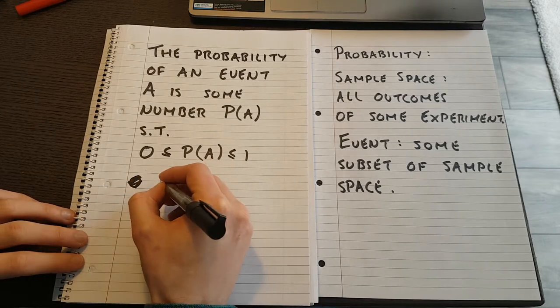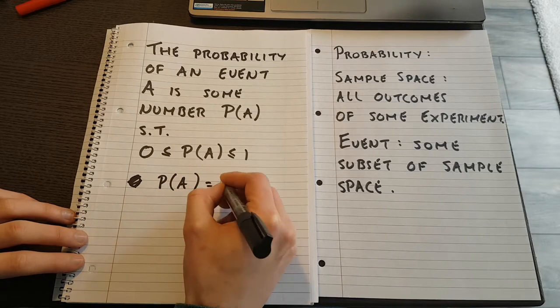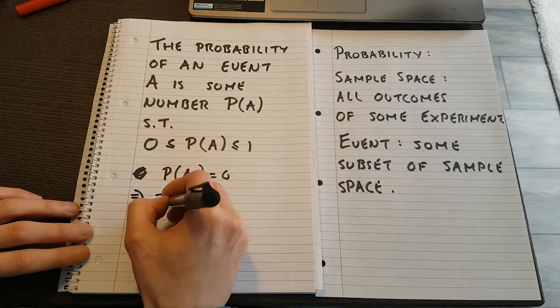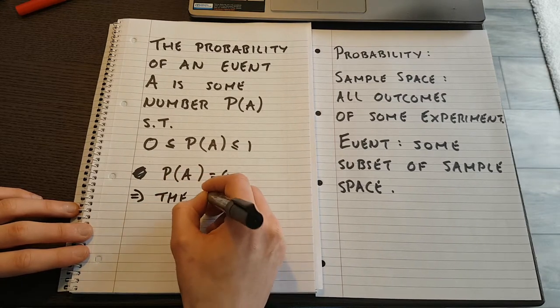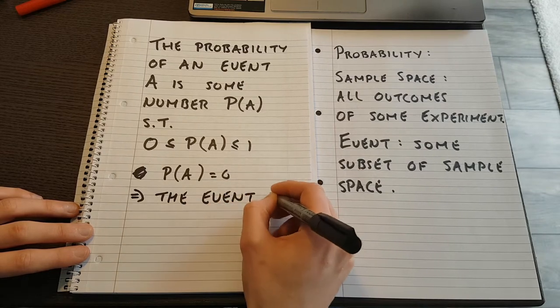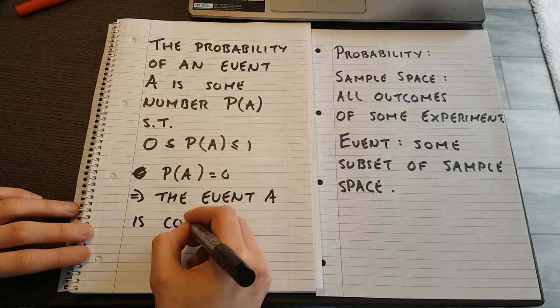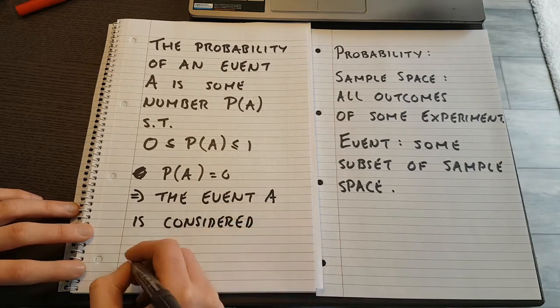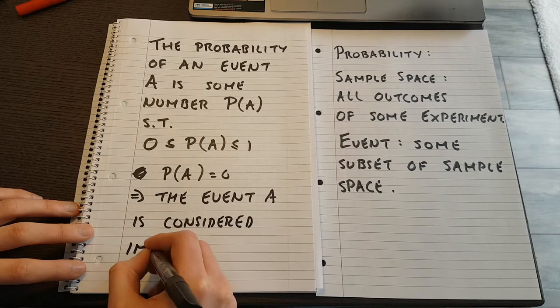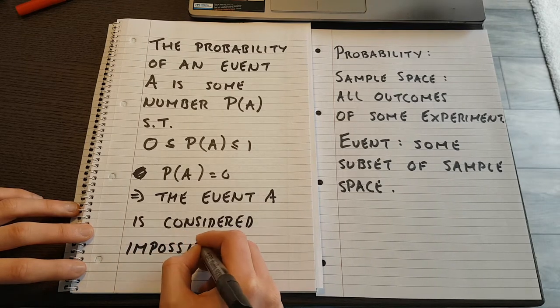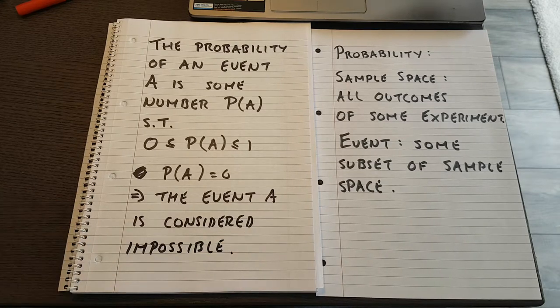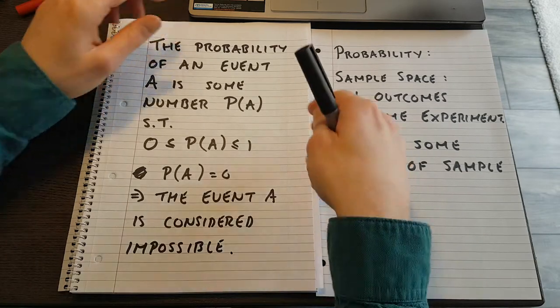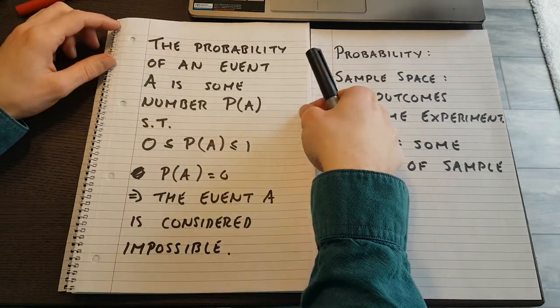P of A equal to 0, what would that indicate? That would indicate that the event A is considered impossible. There is another term that people use, which is almost impossible, and I'll talk a little bit about that in just a moment.